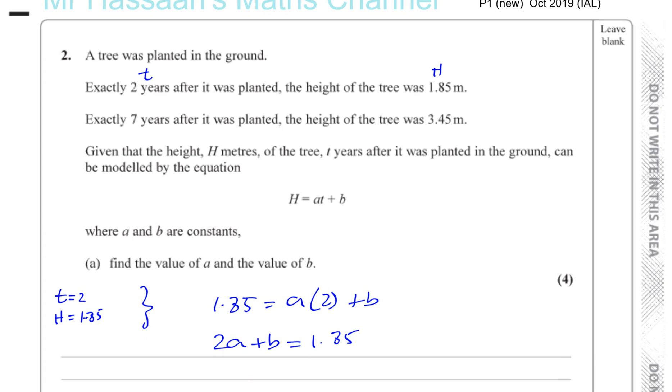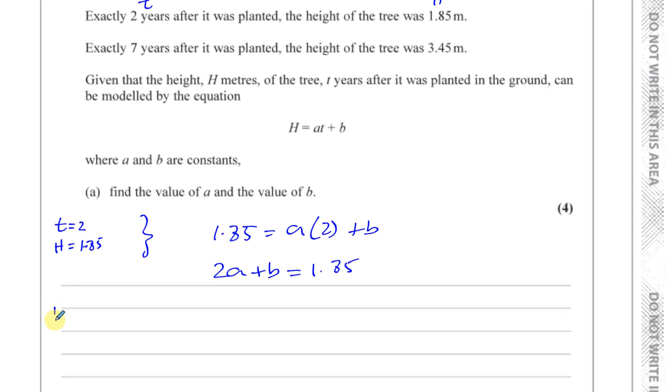From the other pair of values, when t equals 7, H equals 3.45. Also very important, H is in meters and t is in years, so we have no problem with units here. Sometimes they might trick you with units. So we have 3.45 = a times 7 plus b, which gives us 7a + b = 3.45.